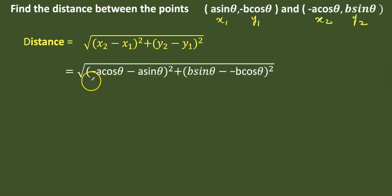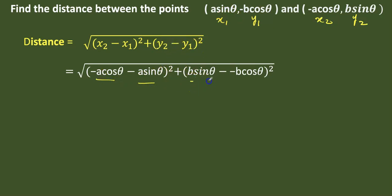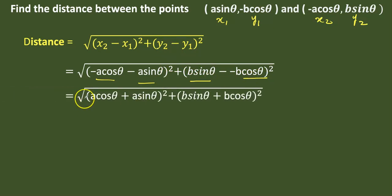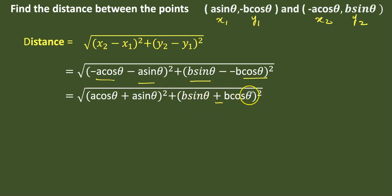Let us substitute the values of x1, y1, x2, y2. We get x2 minus x1 equals negative A cos theta minus A sin theta, the whole square, plus y2 minus y1 equals A cos theta plus A sin theta, the whole square, where minus is taken out as a common. The square of minus is plus, and minus minus becomes plus. Then B sin theta plus B cos theta the whole square. Here A and A are common, and B and B are also common.